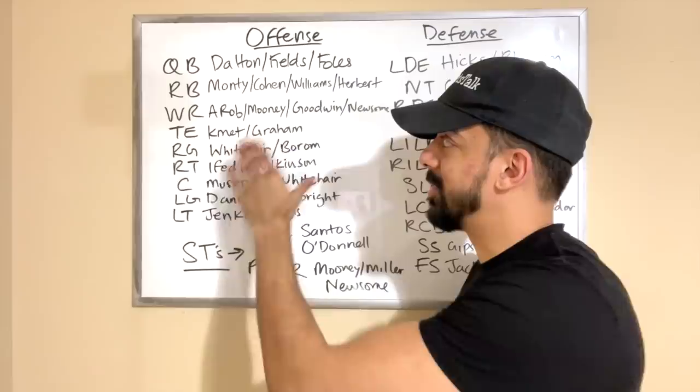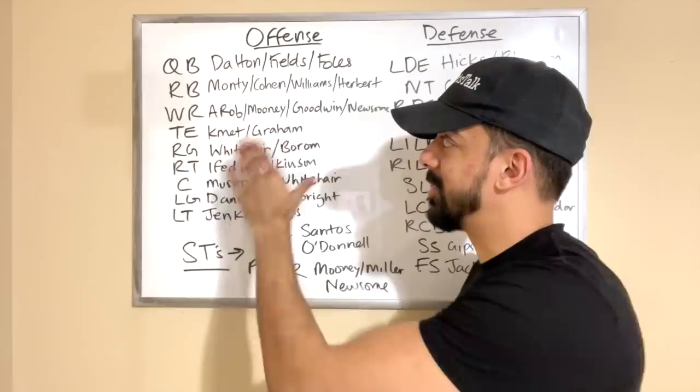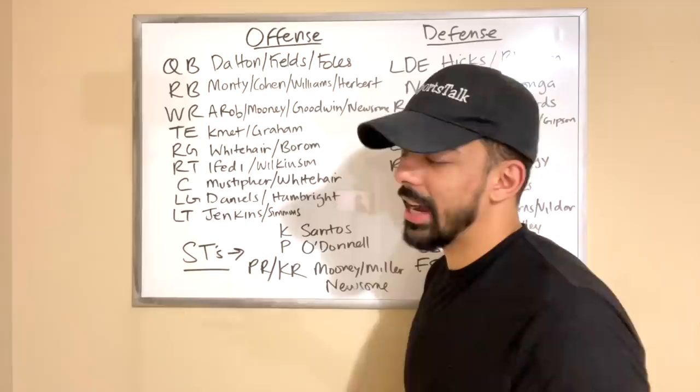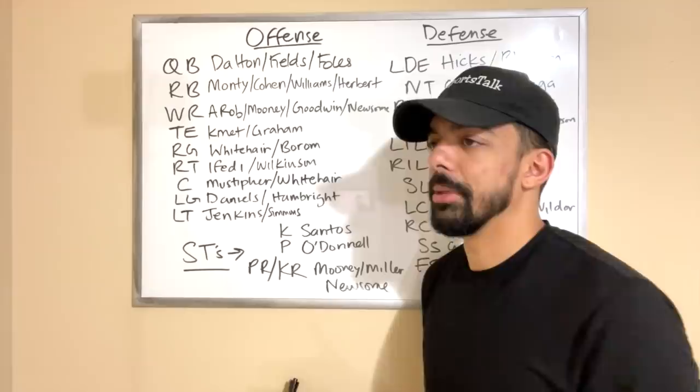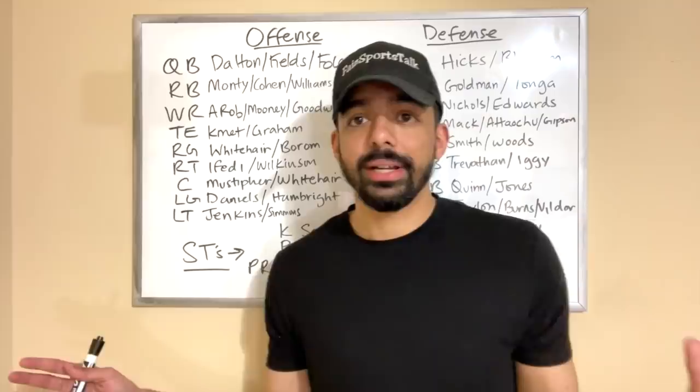Tight end: Cole Kmet - I think he's going to step into a starting role. Jimmy Graham I have as the backup. Behind them we do have depth with guys like J.P. Holtz, but they're not going to see the field much. It's really Cole Kmet and Jimmy Graham that are going to be on the field 99% of the time at tight end.